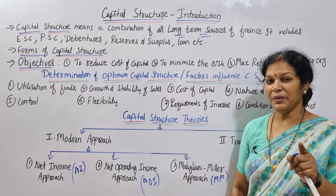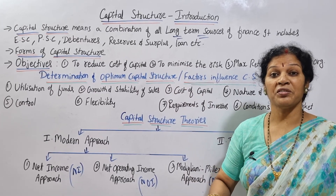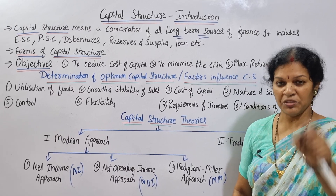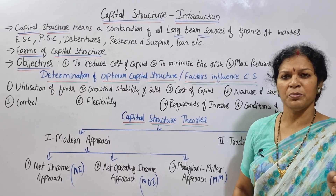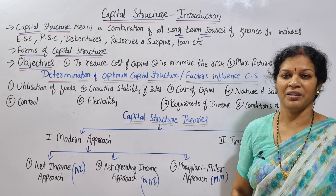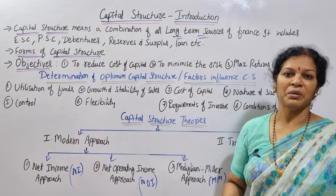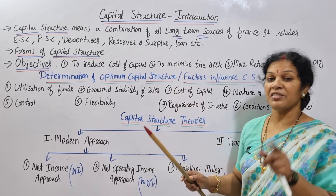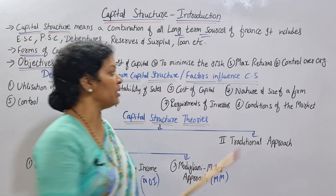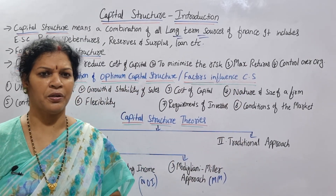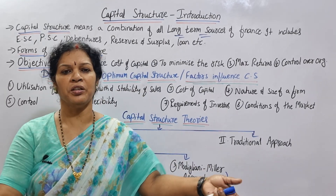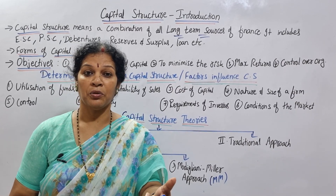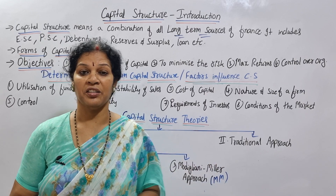Another objective is to minimize the risk of the company. The cost of debt carries financial risk — if you have debt, you must pay interest regardless. We must choose a capital structure that minimizes risk while still providing maximum returns to benefit holders after meeting all obligations.